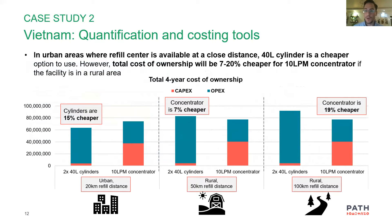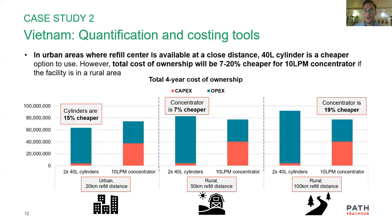Vietnam was lucky throughout most of the pandemic, but over the summer cases shot up near Ho Chi Minh City, creating a real need for oxygen. Cases are now starting to go down, and the government has put out a policy with indicators for provinces to consider for reopening. One indicator is that each commune health center should have two oxygen cylinders. When we heard this from Ministry of Health partners, we thought immediately — there's a tool for this. Is that the best decision? Should we think about trade-offs?